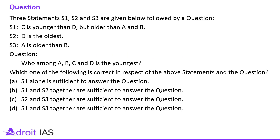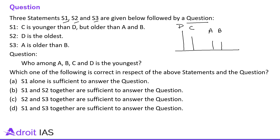First question. There are three statements S1, S2, and S3 given below followed by a question. S1 states: C is younger than D but older than A and B. From the first statement we can draw this figure — C is younger than D but older than A and B.